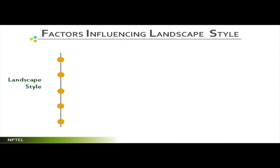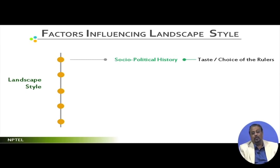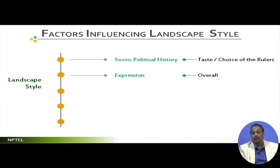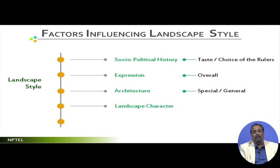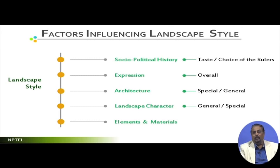Next is socio-political history — the taste and choice of the rulers, and overall expressions: what people think about it, what people felt about it, and how it has been expressed in history. Then architecture — what kind of architecture is associated, whether special or general. And then landscape character — general or special elements and materials, all components and their materials. Together, these bring us to a position to discuss various historical examples.